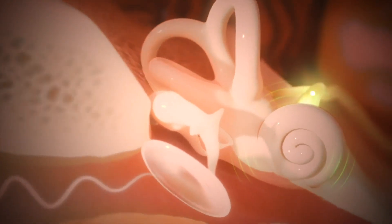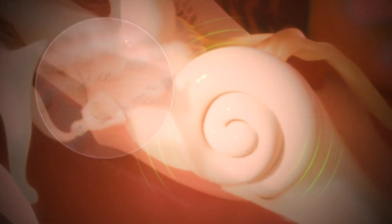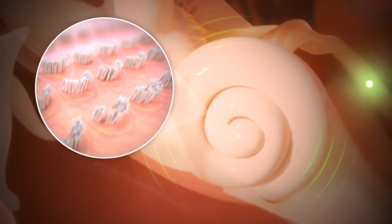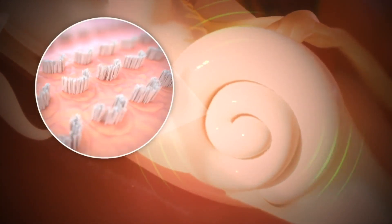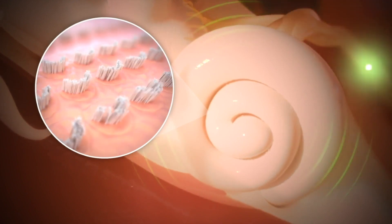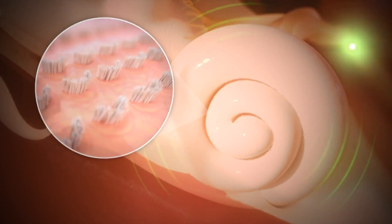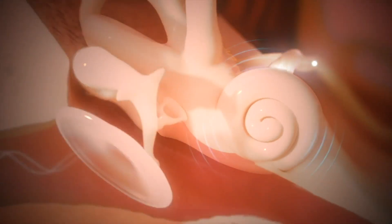If your cochlear is fully functional, the sensory hair cells convert sound vibrations from the eardrum into electrical impulses which stimulate the hearing nerve. The hearing nerve then sends these signals to the brain to be interpreted as sounds.